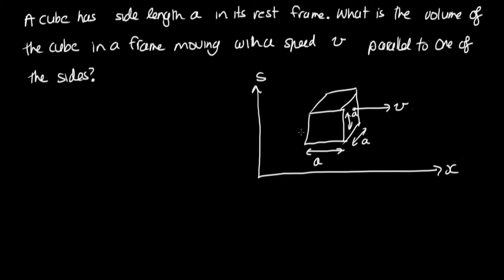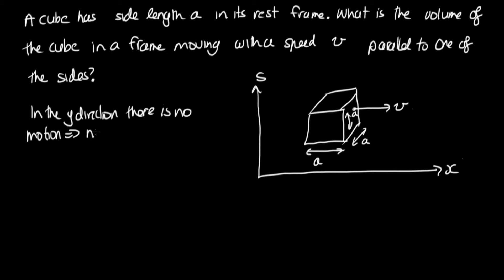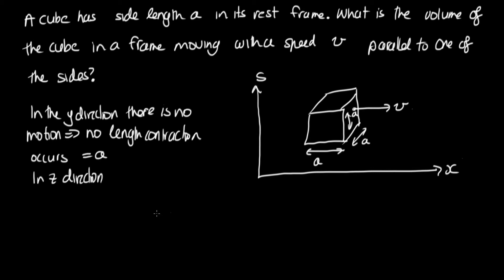First, consider what happens in the y-direction: there is no motion, so no length contraction occurs, and the length remains a in the S frame in the y-direction. The same applies in the z-direction — the length is still a. However, in the x-direction, that's the direction of motion, so we need to apply length contraction.